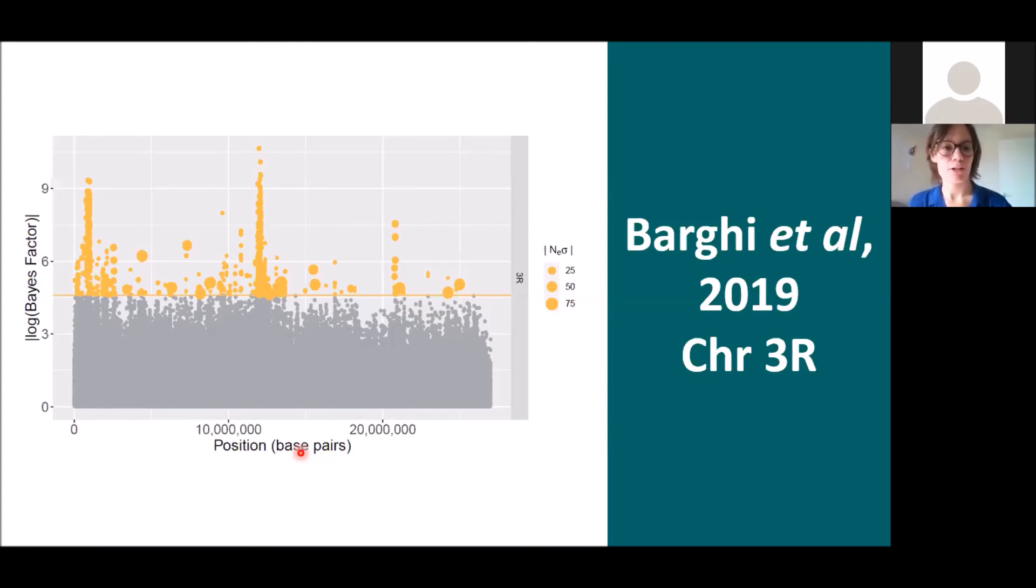And what you can see here is just our test statistic, the Bayes factors, along this chromosome arm. In this case it's just the right arm of chromosome 3. And as you can see, Bait-ER is actually picking up some signals of selection. There are a few clear peaks that seem to show that there is regional selection happening. And this is quite satisfying because it seems that Bait-ER is actually quite conservative and not just telling us that there is selection all across the genome, so that was a very good result.